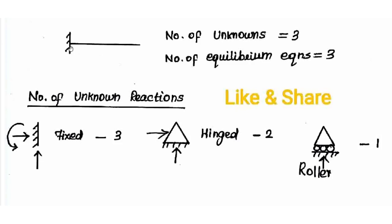Number of unknown reactions = 3, number of equilibrium equations = 3. Static indeterminacy = number of unknowns minus number of equilibrium equations. So static indeterminacy = 0. If the degree of static indeterminacy is 0, the structure is statically determinate.